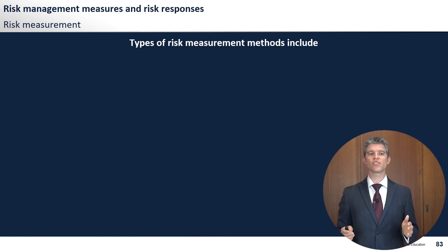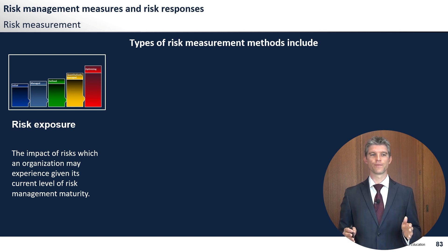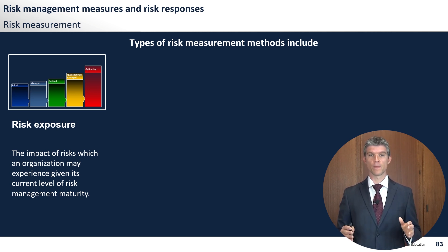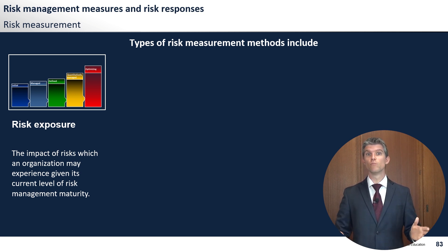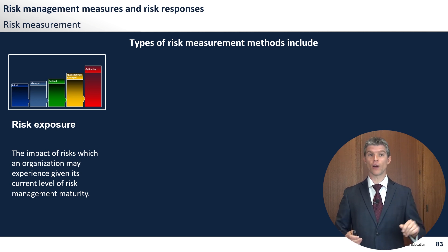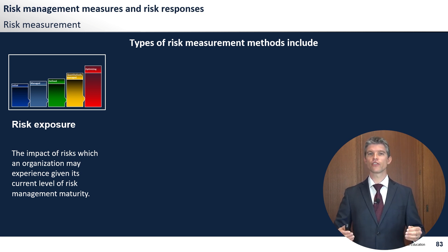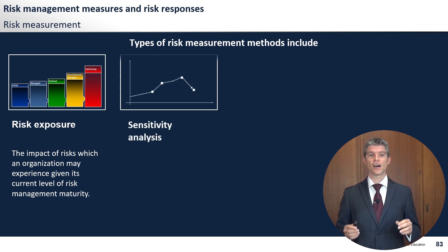We're looking at types of risk measurement methods. One is risk exposure — basically the impact of risks an organization may experience given its current level of risk management maturity. If you take the sum total of all risks an organization might be exposed to and remove everything it's managing, catching, remediating, or avoiding, you're left with risk exposure. You could calculate this in financial terms as your expected loss from overall risks.